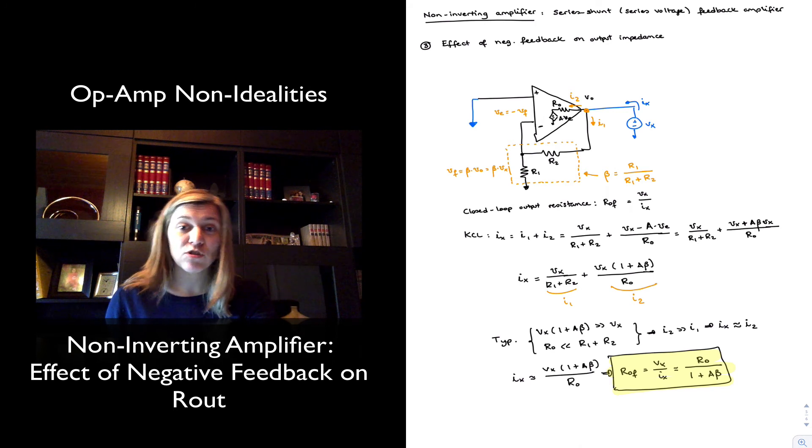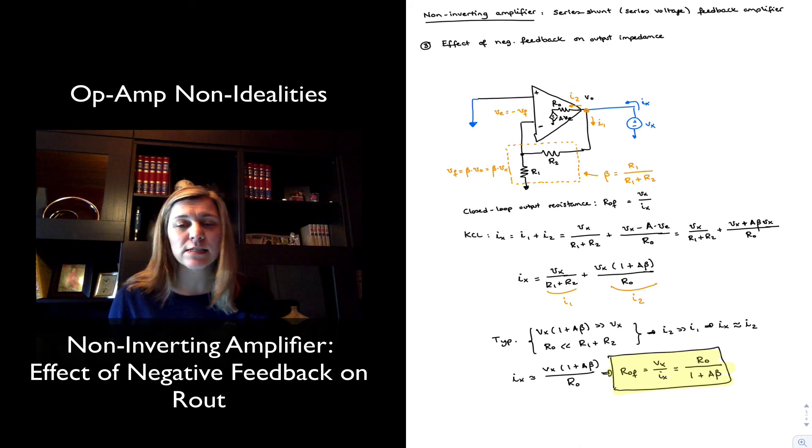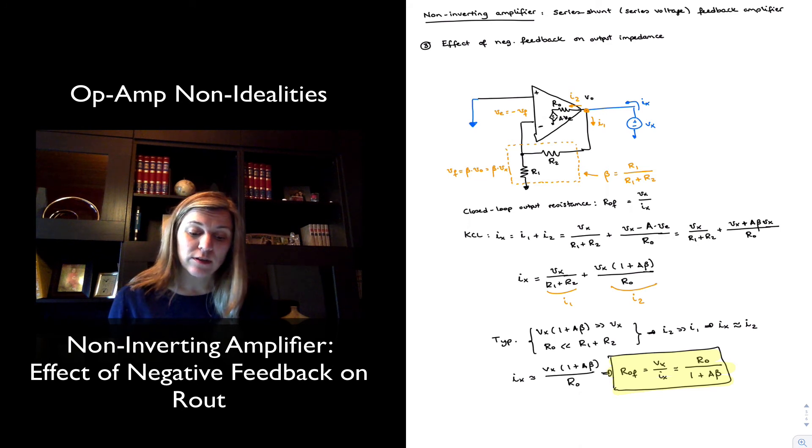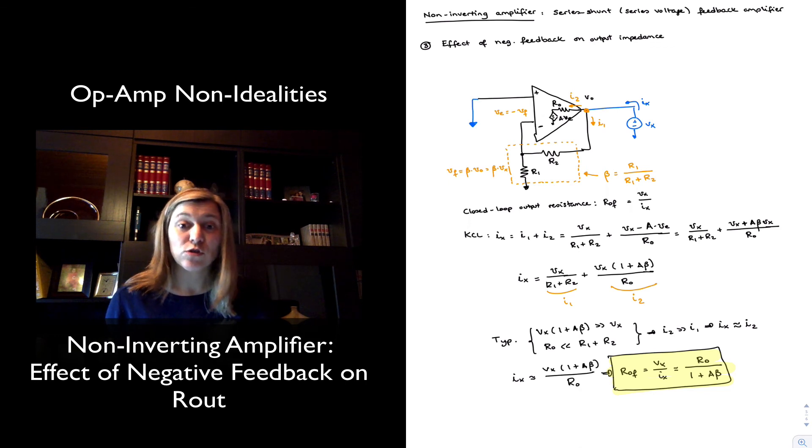So the series shunt, because it increases the input resistance and it decreases the output resistance, it is helpful for voltage amplifiers. For example, a parallel shunt will decrease the input resistance and also the output resistance. And so it will be the best possible scenario for a trans resistance amplifier, and so forth. I'm going to leave it as an exercise for you to go through and do another example. For example, the inverting amplifier, that will be an interesting example to make.